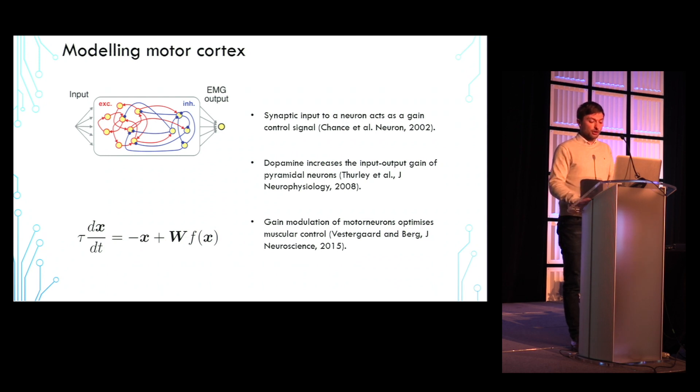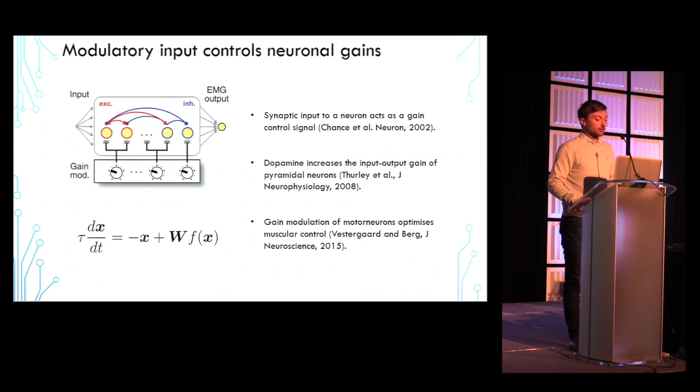Because neuromodulatory projections to primary motor cortex are typically quite sparse, i.e. non-neuron specific, we emulate neuromodulation in our model by including a set of afferents that directly control the input-output gain of groups of neurons. The illustration here on the top left is simply a rearrangement of the recurrently connected neurons so that I can clearly show the modulatory input.